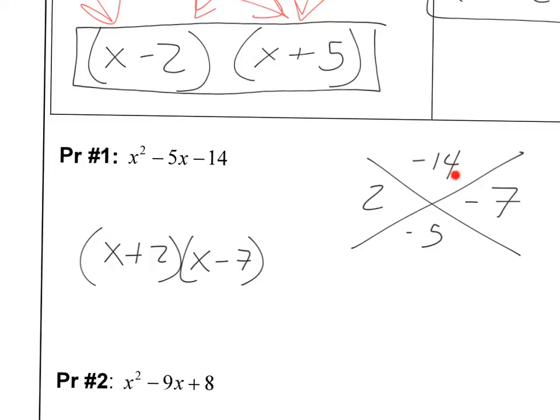Alright, so as you can see, I put my C term up here and I put my B term down here. I'm looking for something that multiplies up to negative 14, adds up to negative 5. I came up with 2 and 7, and particularly 2 and negative 7. So 2 times negative 7 is negative 14, and 2 plus negative 7 is negative 5. So that must be my factor there.